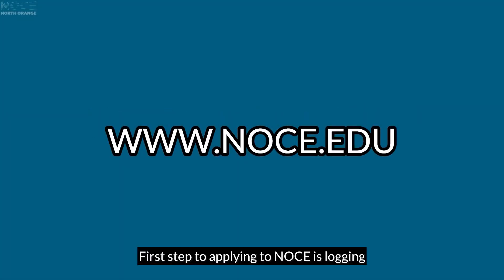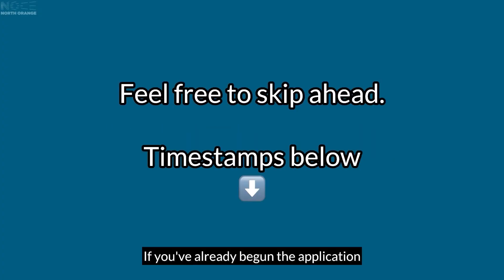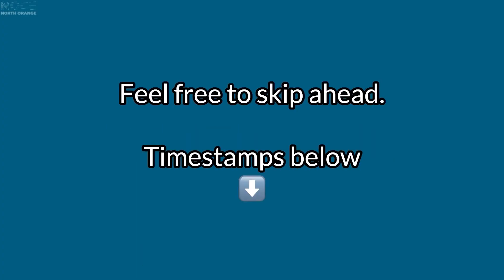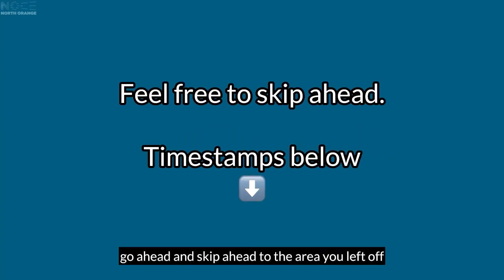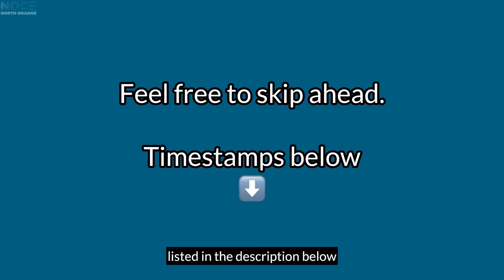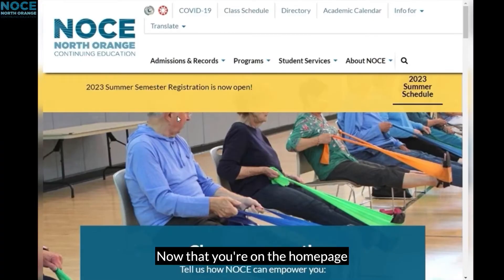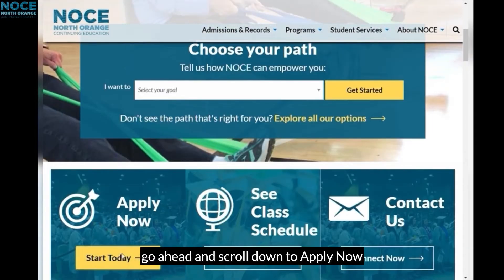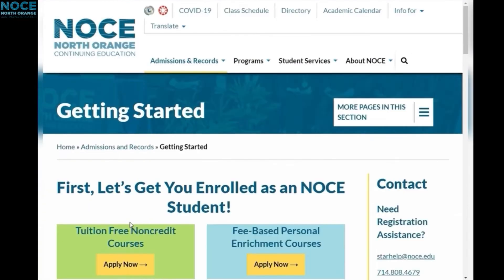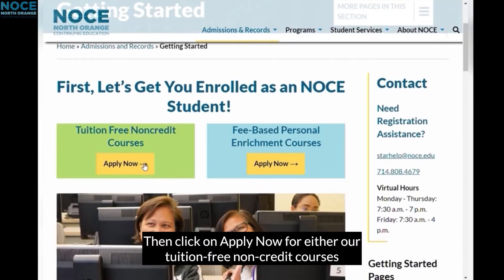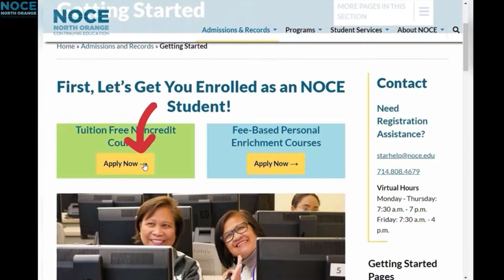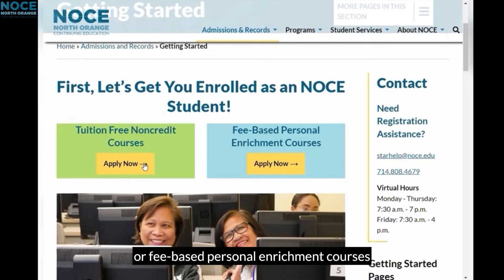The first step to applying to NOCE is logging on to our website at www.noce.edu. If you've already begun the application and are just looking to finish, go ahead and skip ahead to the area you left off. Timestamps for each part of the process are listed in the description below. Now that you're on the homepage, go ahead and scroll down and click on Apply Now for either our tuition-free non-credit courses or fee-based personal enrichment courses.